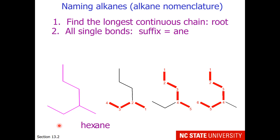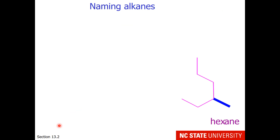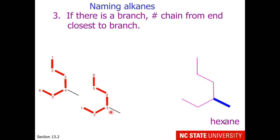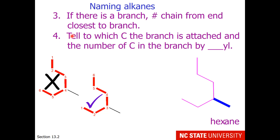Now we need to do something about the branch. We need to know two things: which carbon it comes off of, and how long it is. If there is a branch, we number the chain from the end closest to the branch. Comparing the two numbering options, 3 is lower numerically than 4, so we use this numbering scheme. Our fourth step is to identify which carbon the branch is attached to — that would be the third carbon — and the number of carbons in the branch using the root and '-yl'.